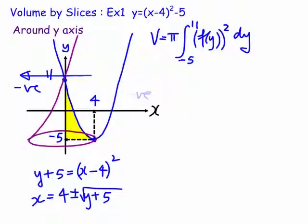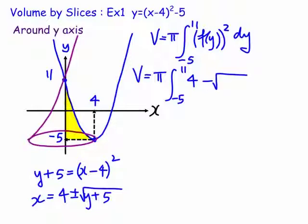So let's write the formula now. V equals pi, integral from minus 5 to 11. Now this is going to be 4 minus the square root of y plus 5. Now we're going to square the whole lot here, dy.